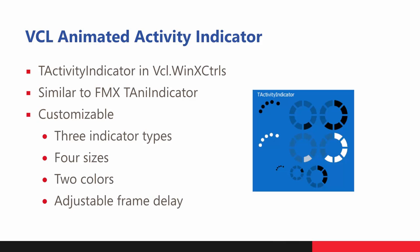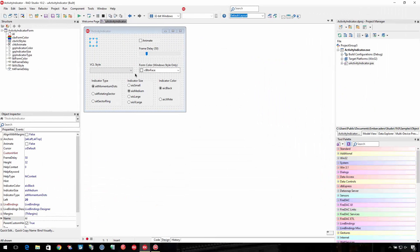We have a new activity indicator similar to FireMonkey's animated indicator — the little spinning dot you see in Windows. It indicates something is happening but we're not sure when it's going to end. There are different sizes, types, and color options.